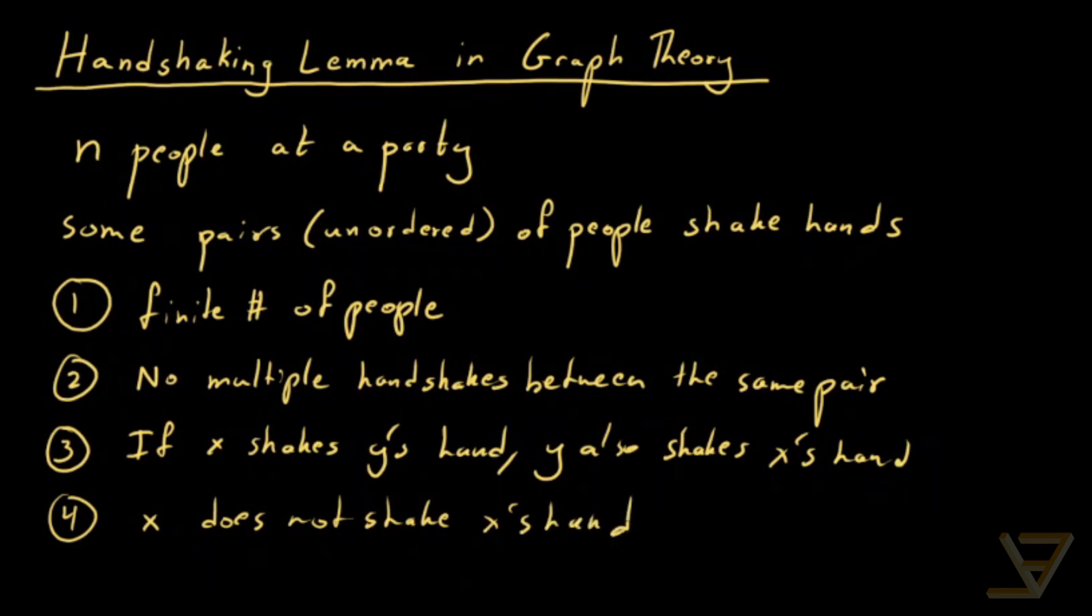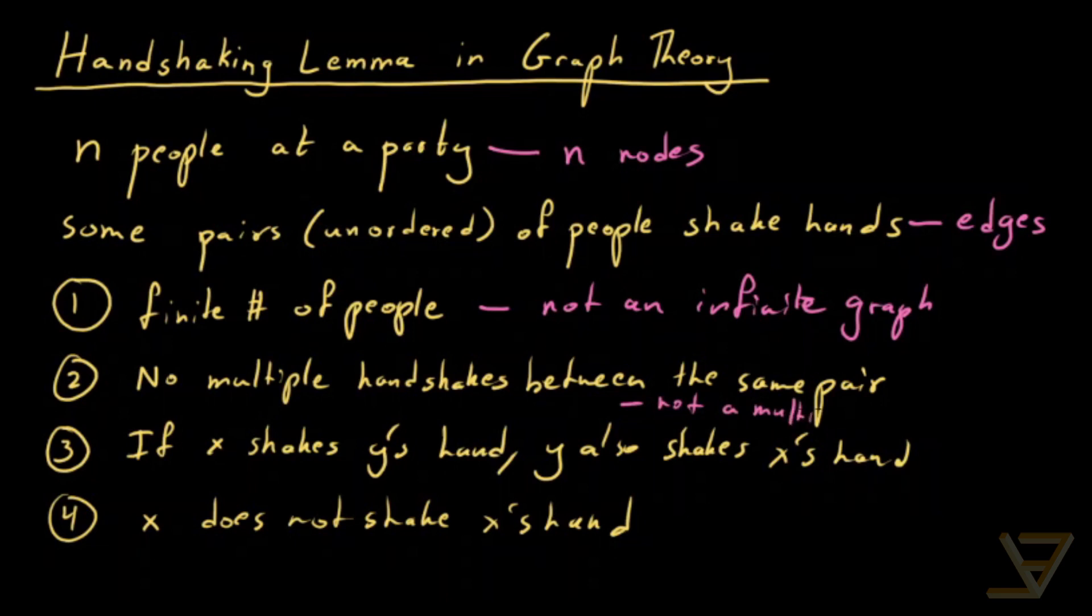So in terms of graph theory, if these n people are n nodes and the handshakes are the edges between unordered pairs, then finite people means not an infinite graph. No multiple handshakes means not a multigraph. If X shakes Y's hand, Y shakes X's hand means it's not directed. So there are no arrows, just line segments as edges. And this one means no loops.